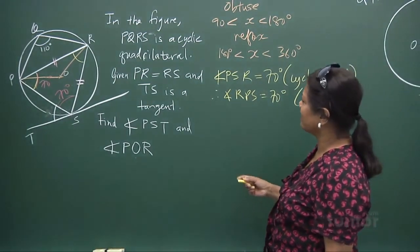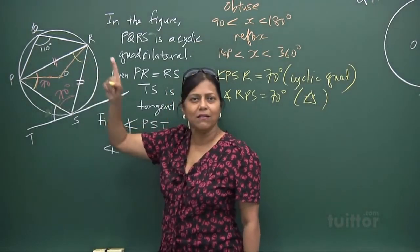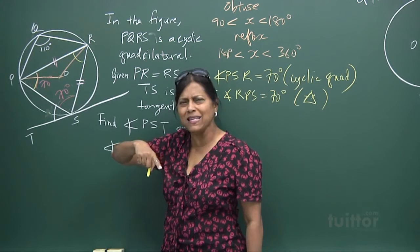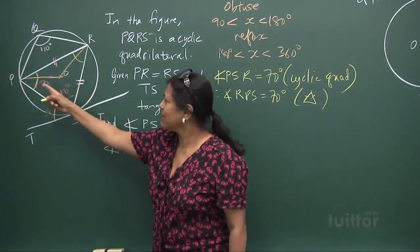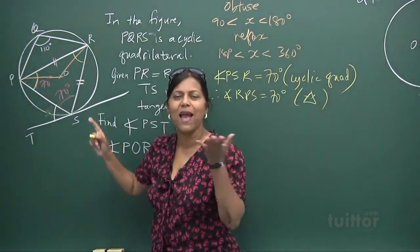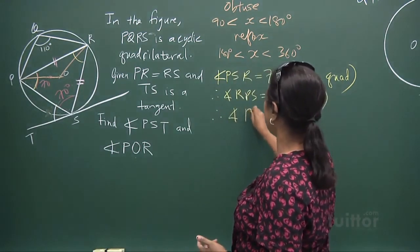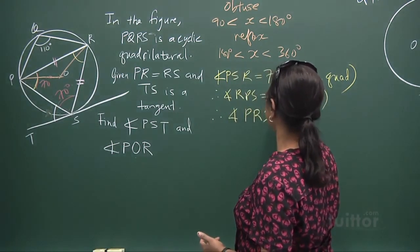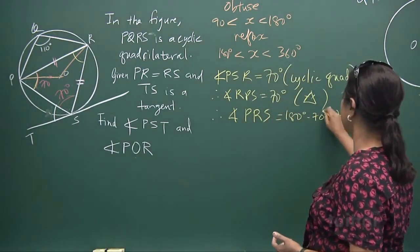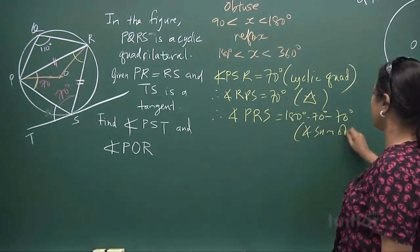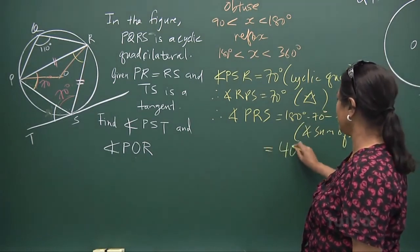Now we have two angles of the triangle as 70° and 70°, so the third angle can be worked out easily. Angle PRS = 180 − 70 − 70 = 40 degrees, by angle sum of triangle.